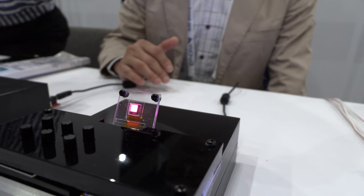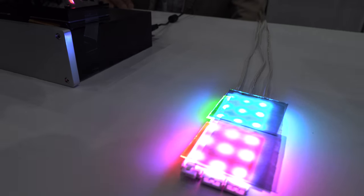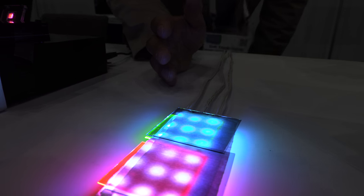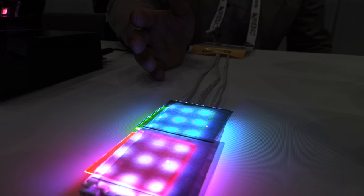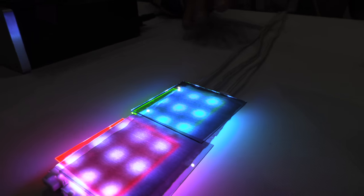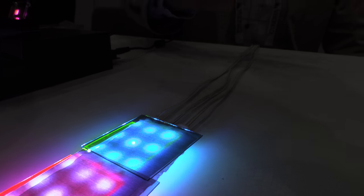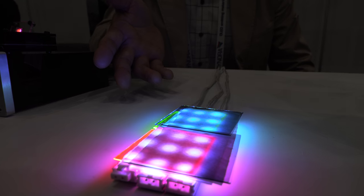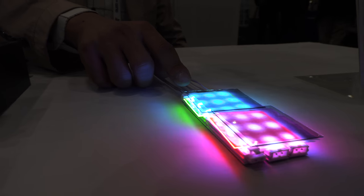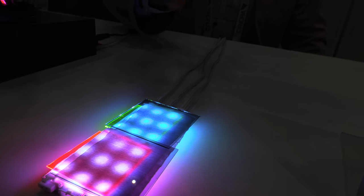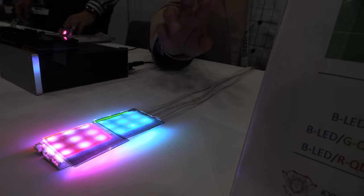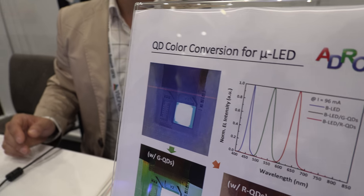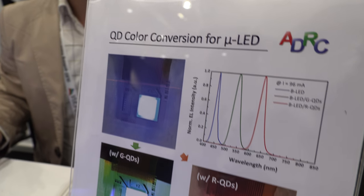Yes, we have a Quantum Dot film. This is a film of Quantum Dot on the glass. This can convert the color — a blue LED can convert to green or red, using the Quantum Dot filter. So this is Quantum Dot color conversion for micro-LED.